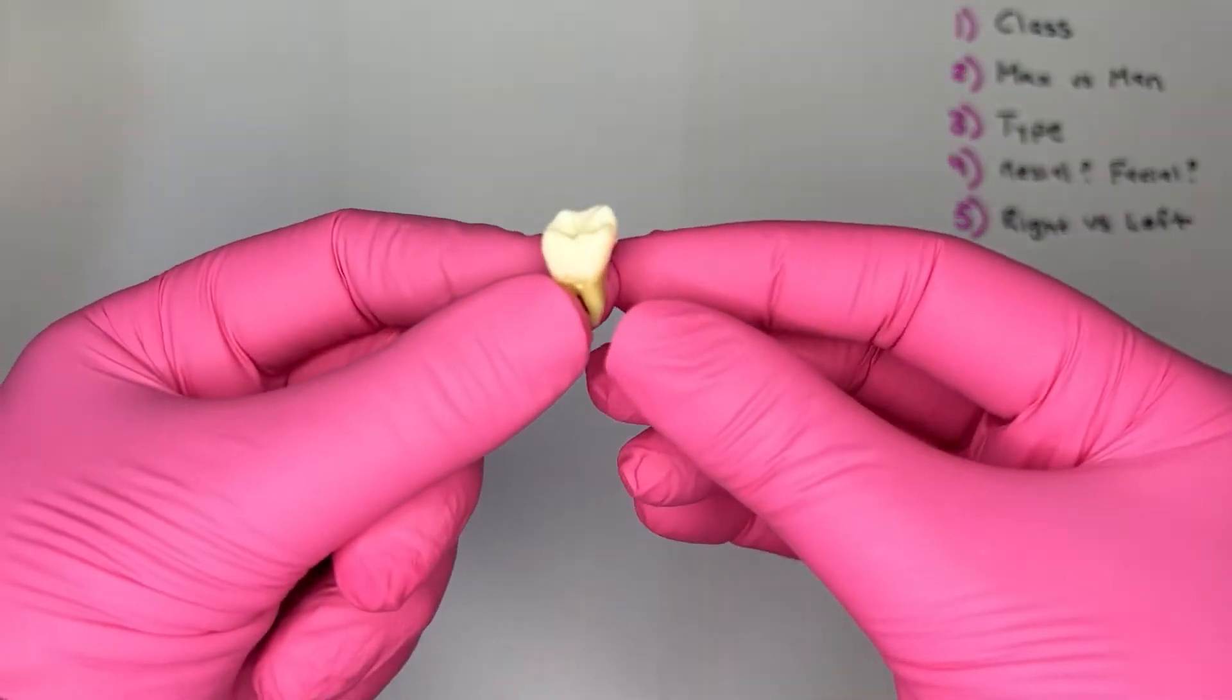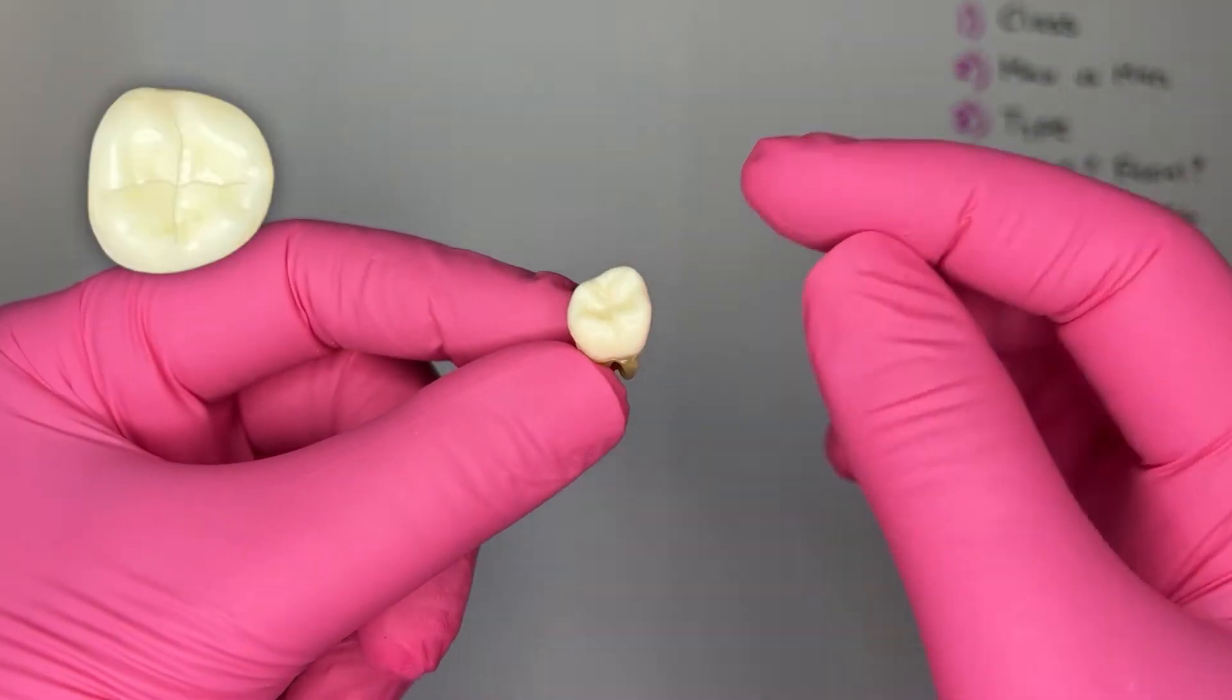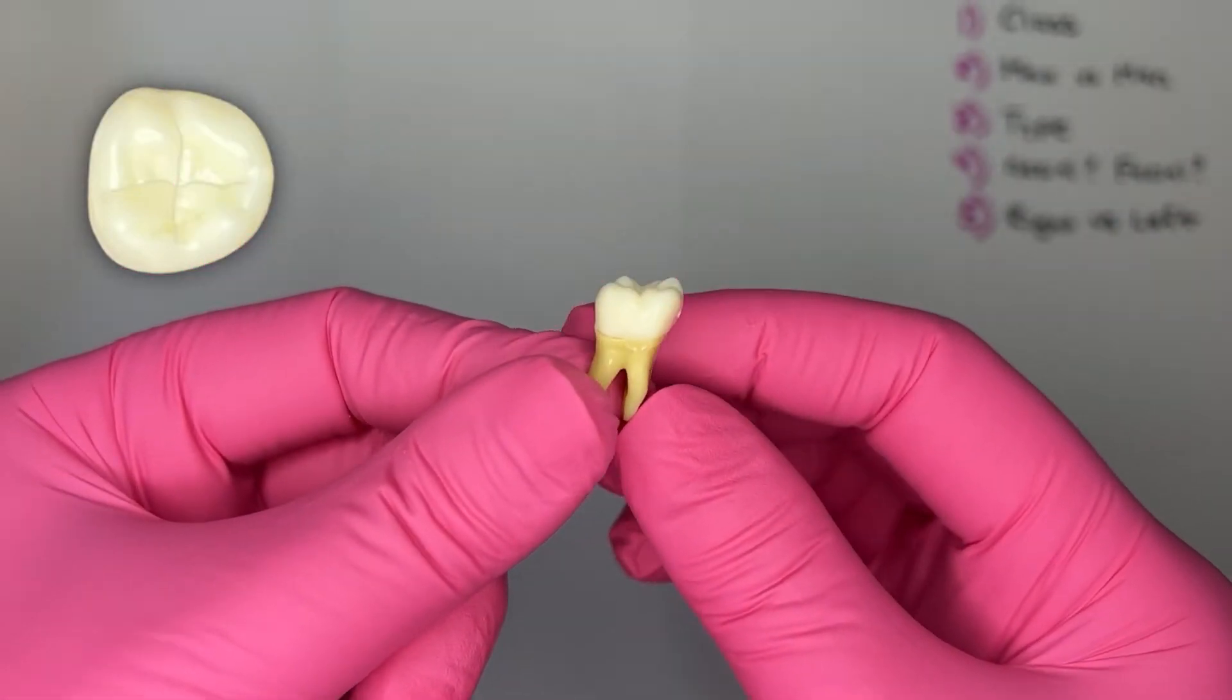Step one, what class of tooth is this? Let's look at the number of cusps. There's one, two, three, four cusps, so I know this is a molar.